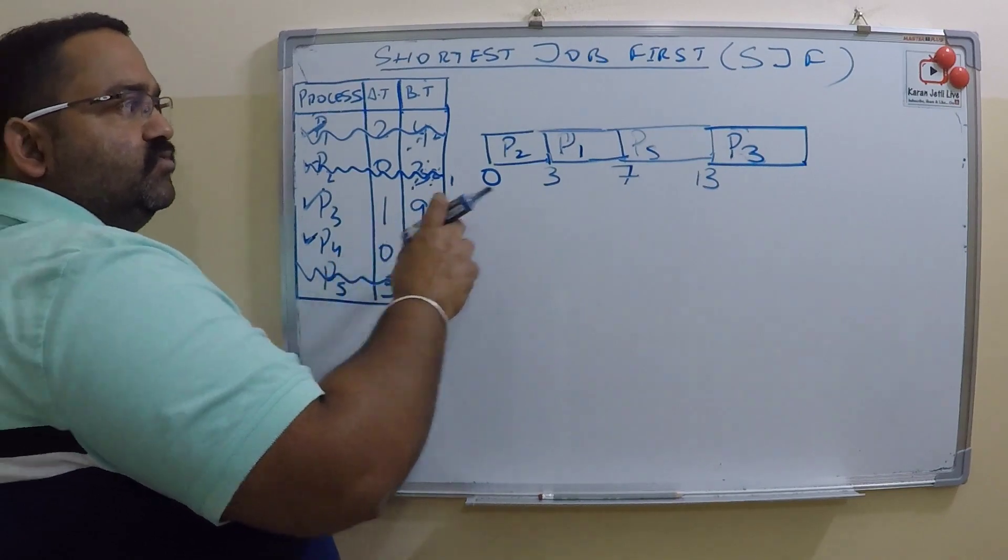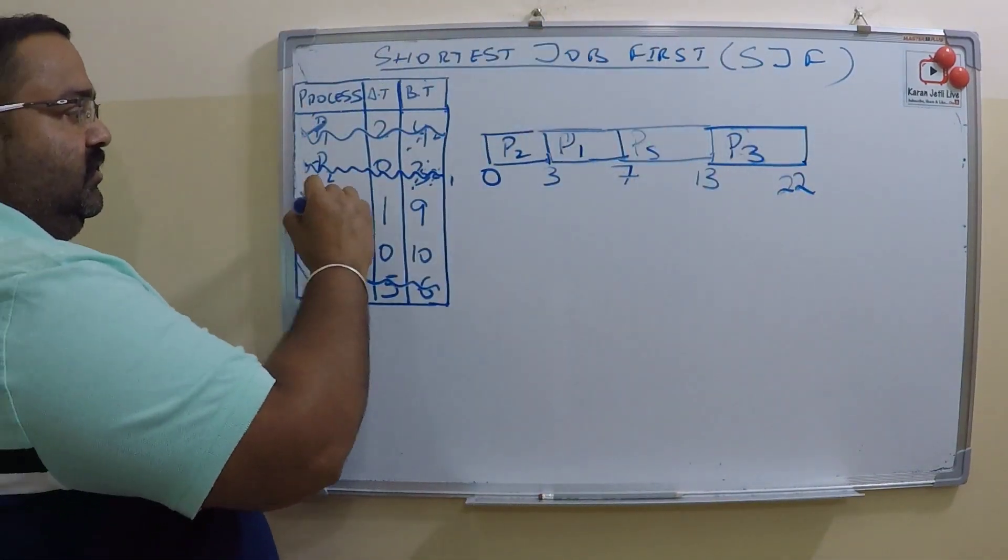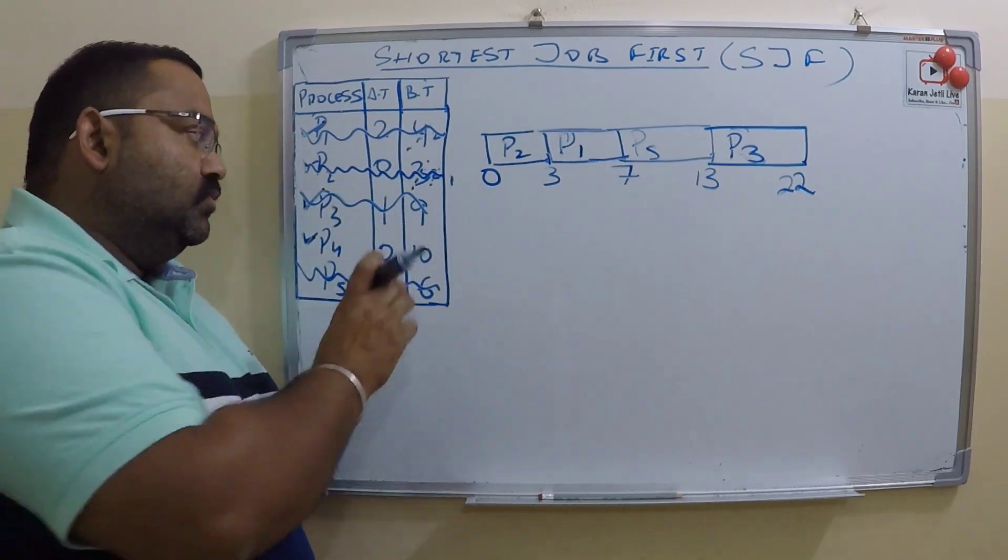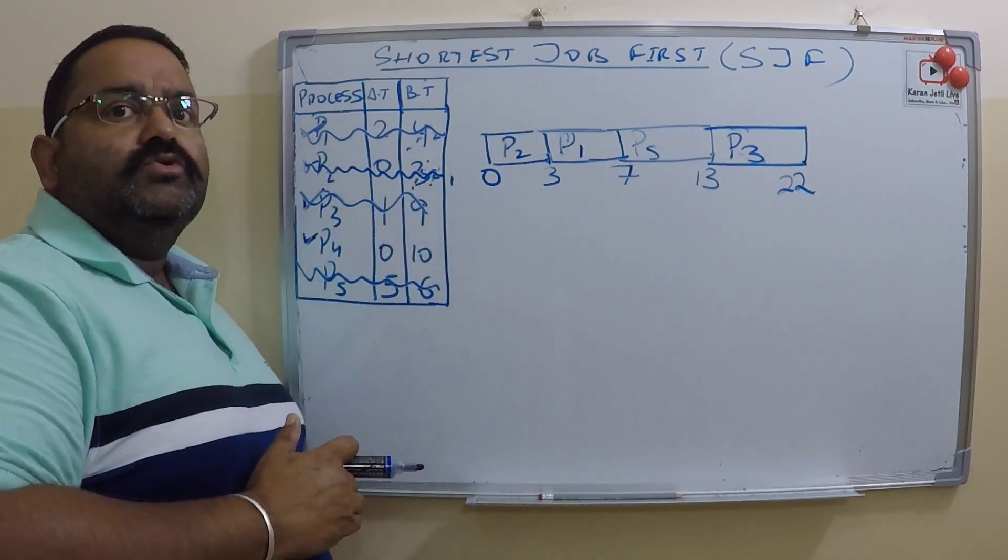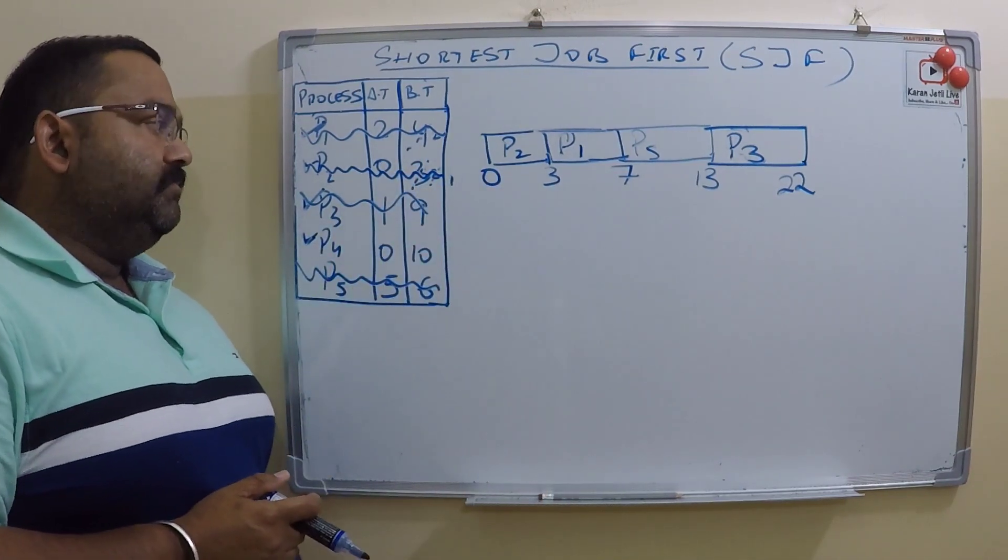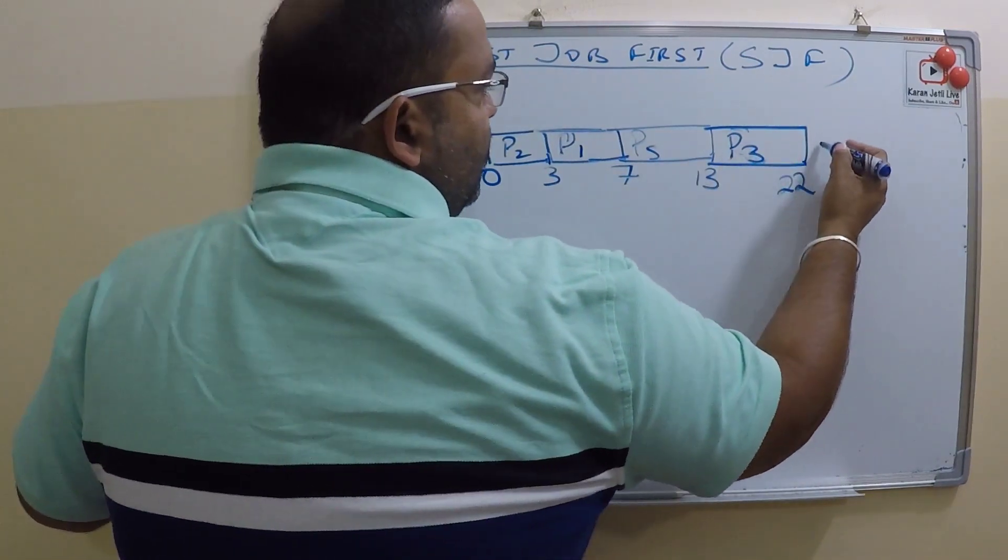Now comes the last process whose burst time was longest. It will be the last to be executed, P4. P4 will start at 22 and it will end at 32.